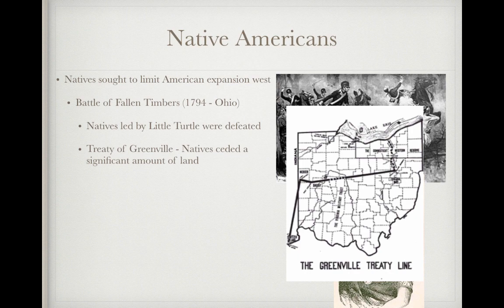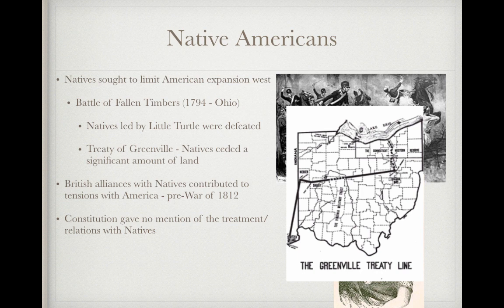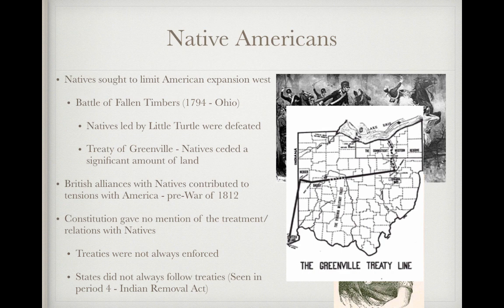British alliances with Natives contributed to tensions with America. Britain is going to side with many Native Americans, and this will be a major cause of the War of 1812, which we'll talk about in the next period. The Constitution gave no mention of the treatment or relations with Natives, so there's really no blueprint for how to make treaties with Natives or how the U.S. should engage with them. Treaties were not always enforced, especially by states if there was a federal treaty, and this is seen in period four with the Indian Removal Act.